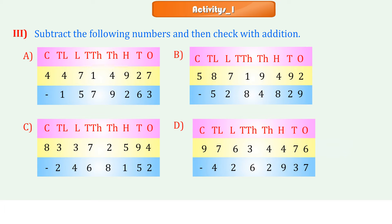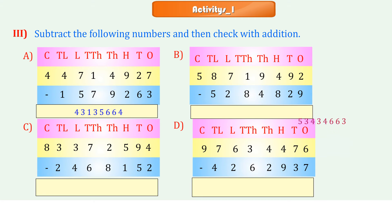Part C: Crores 8, Ten Lakhs 3 and 2, Lakhs 3 and 4, Ten Thousands 7 and 6, Thousands 2 and 8, Hundreds 5 and 1, Tens 9 and 5, Ones 4 and 2. Part D: Crores 9, Tens 9, Ten Lakhs 7 and 4, Lakhs 6 and 2, Ten Thousands 3 and 6, Thousands 4 and 2, Hundreds 4 and 9, Tens 7 and 3, Ones 6 and 7.